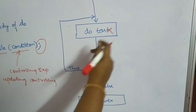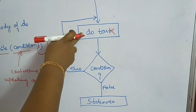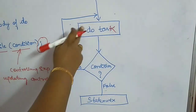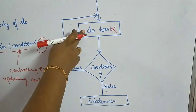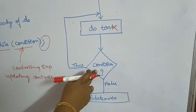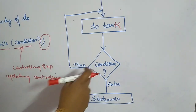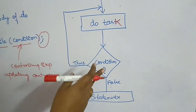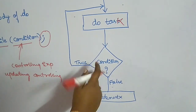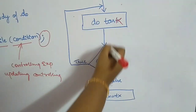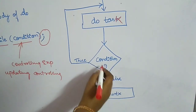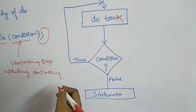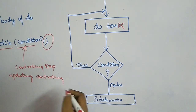Now let's look at the flowchart. The do block executes irrespective of any condition — it runs at least once. After the do block, the condition is evaluated, and there are two outcomes: true or false. If the condition is true, the do block executes again. If false, execution continues with the statement immediately after the do-while.